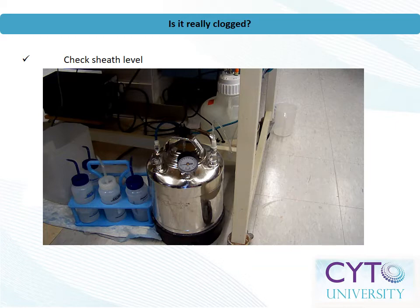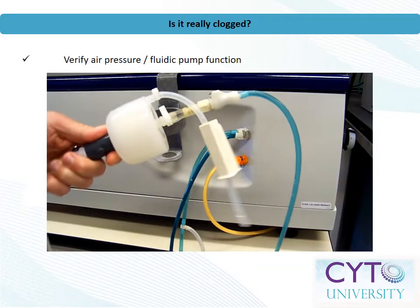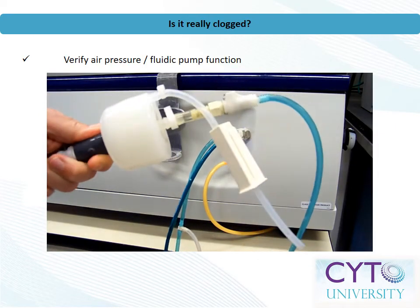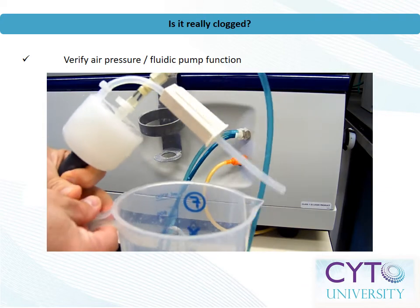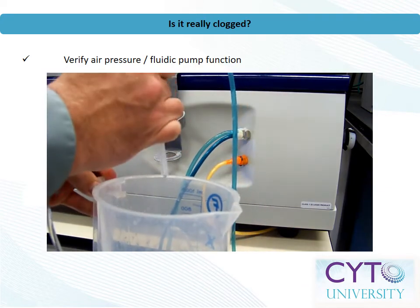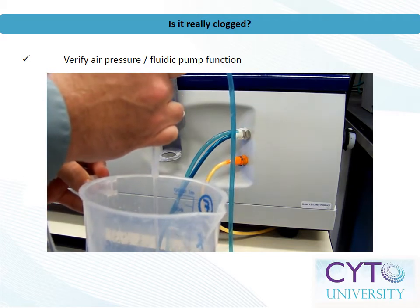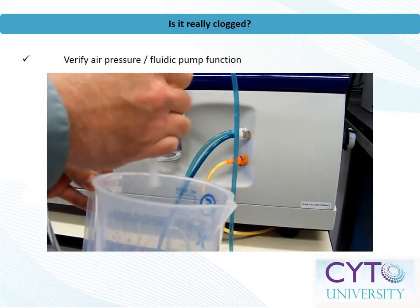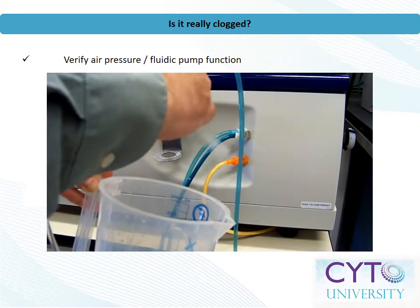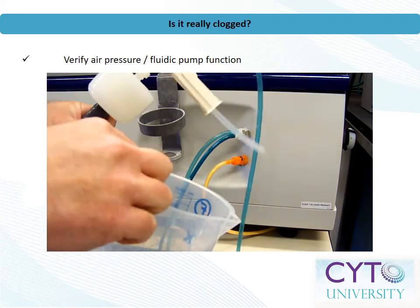First, let's check the sheath fluid level to be sure there is enough. Next, let's be sure no air bubbles have airlocked the sheath filter. Trapped air can typically be vented through a valve on the sheath filter. Carefully unscrew the vent cap or roller valve until only liquid escapes. If your instrument is equipped with a hydrophobic filter on the waste cap, check that as well to be sure it isn't wet.